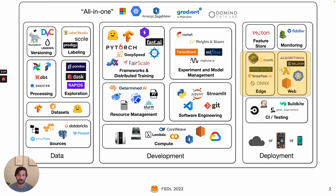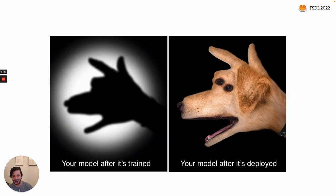We're talking about this part of the life cycle. And why do we spend a whole week on this? Maybe the answer is obvious: if you want to build machine learning powered products, you need some way of getting your model into production. But I think there's a more subtle reason as well, which is that deploying models is a really critical part of making your models good to begin with.